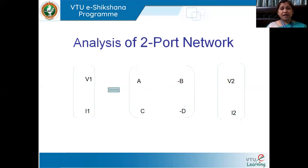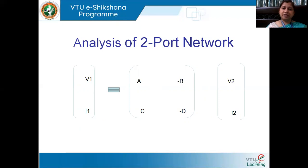Similarly, next analysis can be done using ABCD parameters. So Z, Y, H, and ABCD parameters are basically used for the analysis of a two-port network, where the variables are in terms of current and voltage.